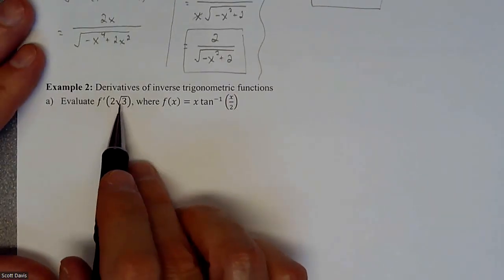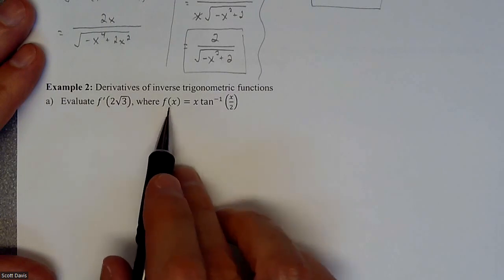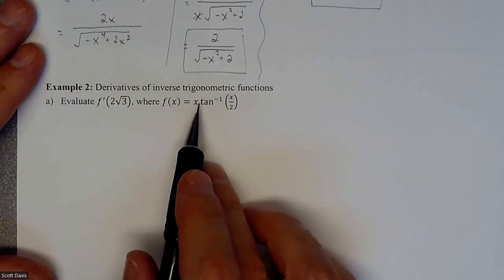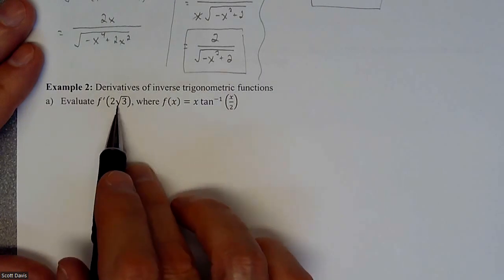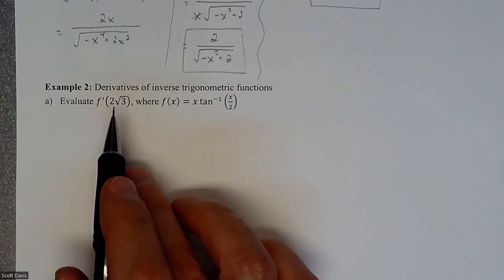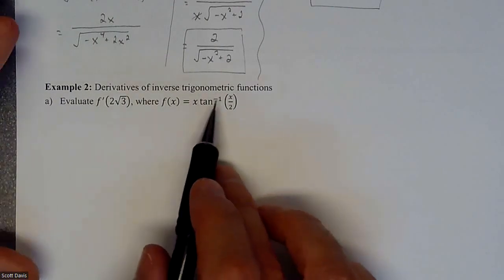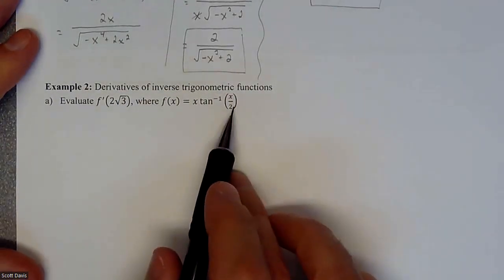In this example, we are trying to find f prime at 2 root 3, where our f of x is equal to x times the inverse tangent of x over 2. So we are trying to find the slope at a particular point. In order for us to find the slope at a particular point, we need to do the derivative of this, and then go ahead and plug that in.